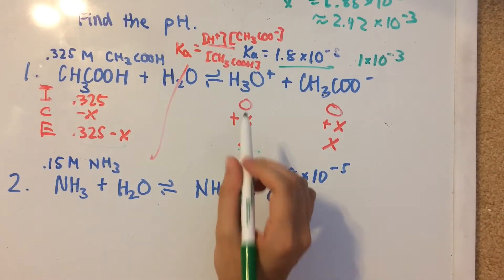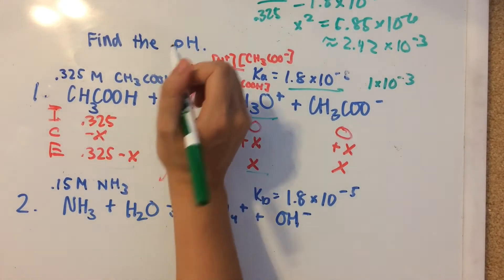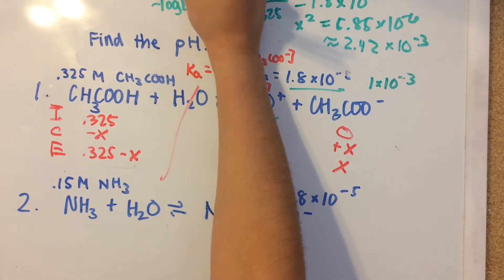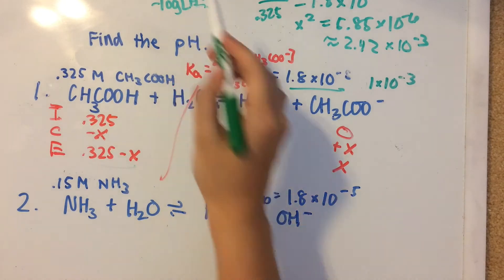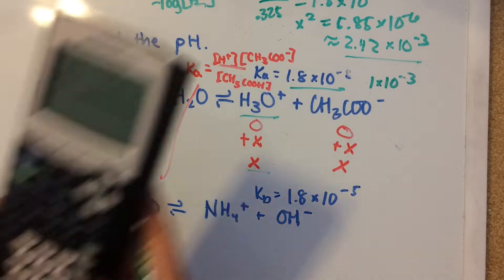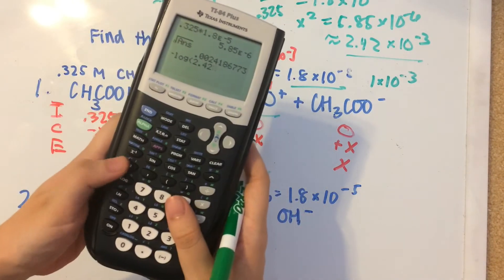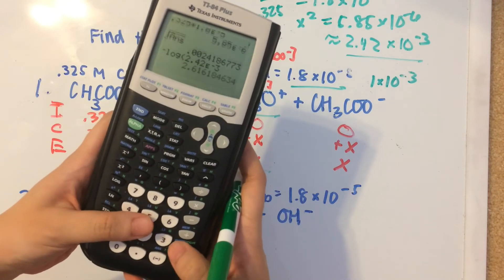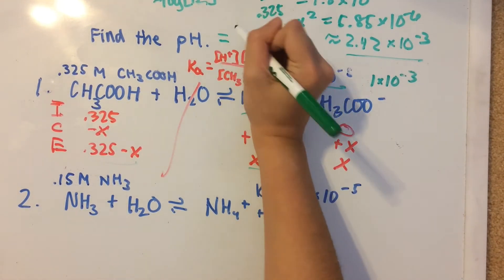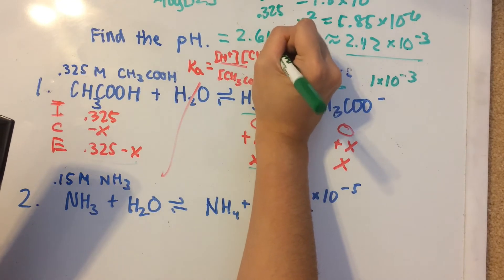And we also found out that x is the concentration of H3O plus at equilibrium. So remember, pH is equal to the negative log of the concentration of H plus. Well, we just found the concentration of H plus. It's this. So all we need to do is put in the negative log of 2.42 times 10 to the negative third. And that's about 2.6. So the pH is going to be 2.616.